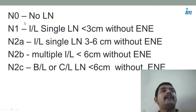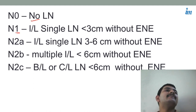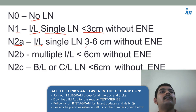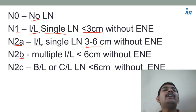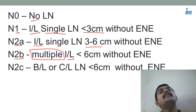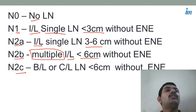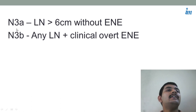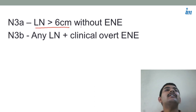For the nodal system: N0 means no lymph node involvement. N1 means same-side single lymph node of less than three centimeters. N2A is ipsilateral single lymph node of three to six centimeters. N2B — think 'multiple' — so multiple ipsilateral lymph nodes of less than six centimeters. N2C is bilateral or contralateral lymph node of less than six centimeters. N3A is any lymph node which is more than six centimeters — it doesn't matter whether it is ipsilateral, contralateral, or bilateral; every lymph node more than six centimeters comes in N3A.